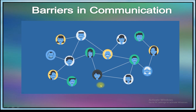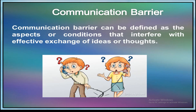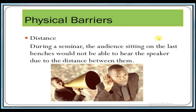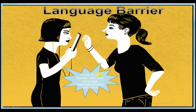The next slide is about barriers in communication. A communication barrier can be defined as aspects or conditions that interfere with effective exchange of ideas or thoughts. The first type of barrier is the physical barrier — it can stop you from being comfortable with a person you do not come face to face with often. For example, in a seminar hall, the audience sitting on the last benches would not be able to hear the speaker due to the distance between them.